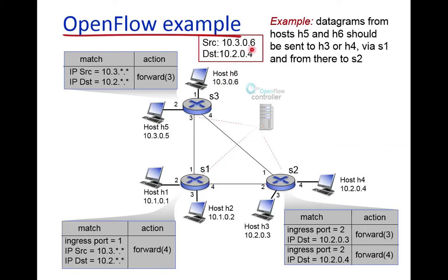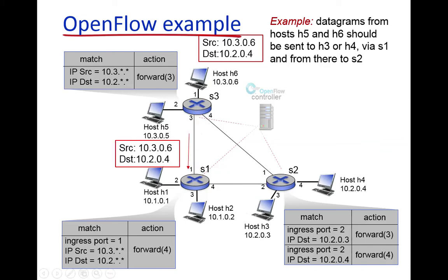Suppose host H6 with source address 10.3.0.x generates a packet with destination 10.2.0.4. When this packet is transmitted, it will be received at switch S3. S3 has a forwarding flow table. The source IP and destination IP will match with a particular header pattern, and the action for that match is to forward the packet on port number 3. So this packet will be forwarded on port 3, and it will arrive at switch S1.